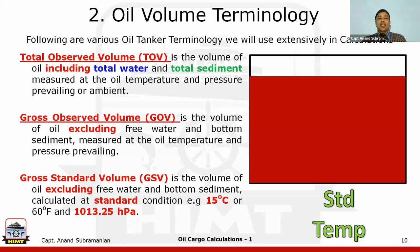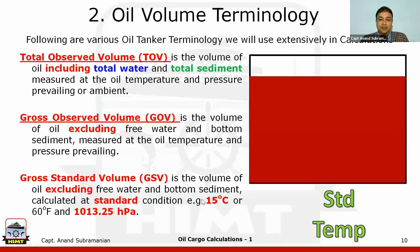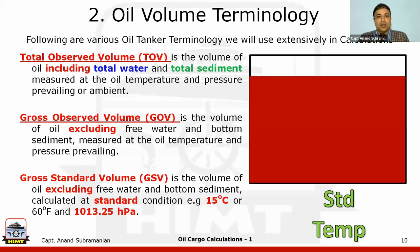We also have gross standard volume (GSV). From gross observed volume, we go one more step further. Gross observed volume is at the prevailing ambient temperature, whereas gross standard volume brings us to the standard temperature of 15 degrees Celsius. As we saw in the previous example, volume keeps fluctuating if we change temperature. So for our calculations we must have a standard volume at a particular standard temperature — 15 degrees Celsius — which is used worldwide for tanker calculations.